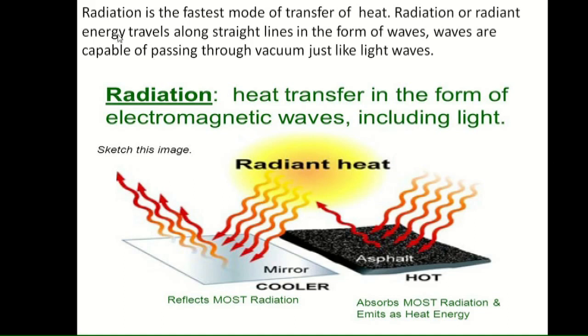Radiation is the fastest mode of transfer of heat. Radiation or radiant energy travels along straight lines in the form of waves. These waves are capable of passing through vacuum just like light waves. For example, electromagnetic waves reflect in a mirror, but in black objects the electromagnetic waves are absorbed.